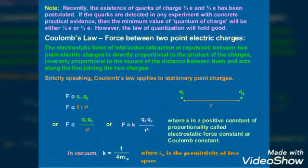That means F is proportional to q1 multiplied by q2. Also, F is inversely proportional to the square of the distance, meaning F is proportional to 1/r².